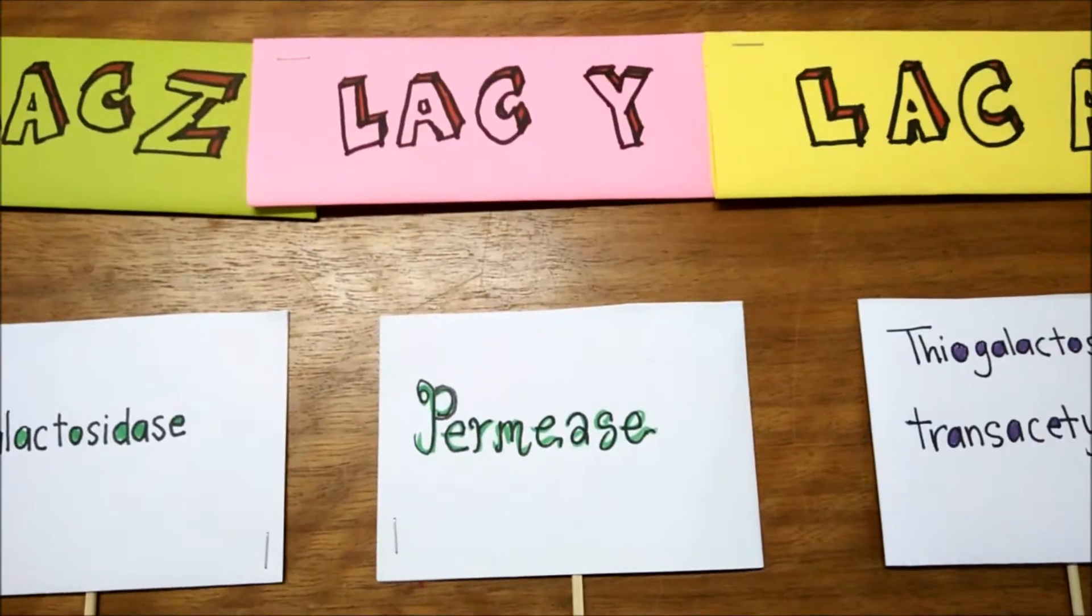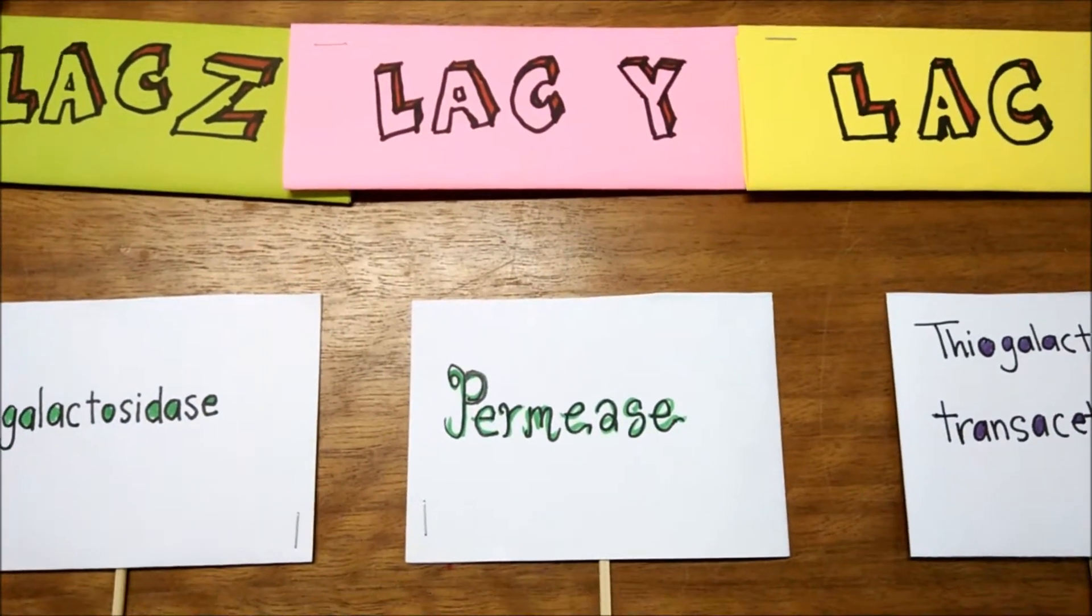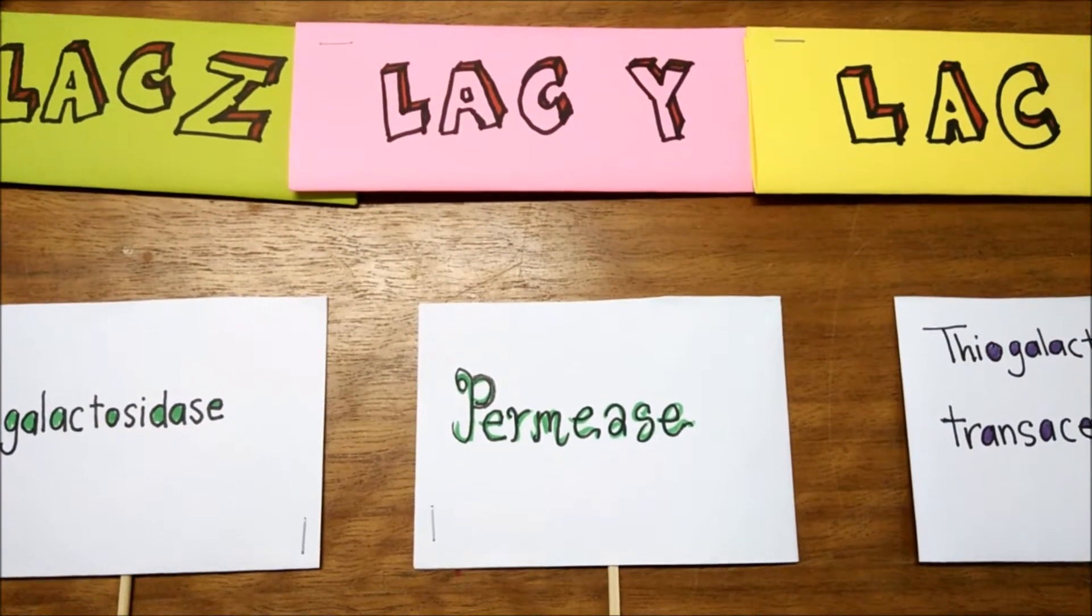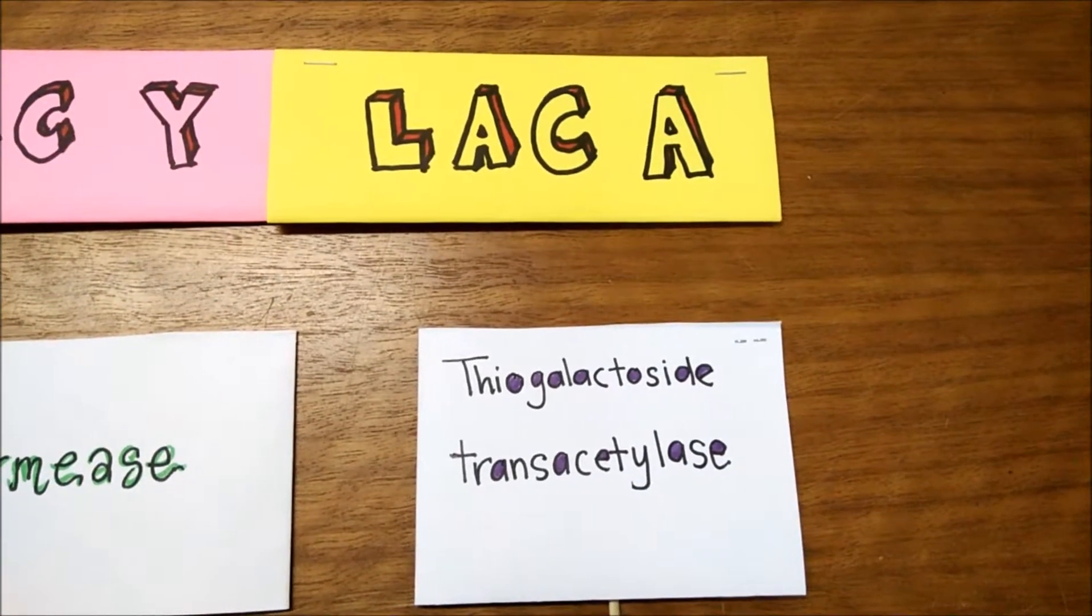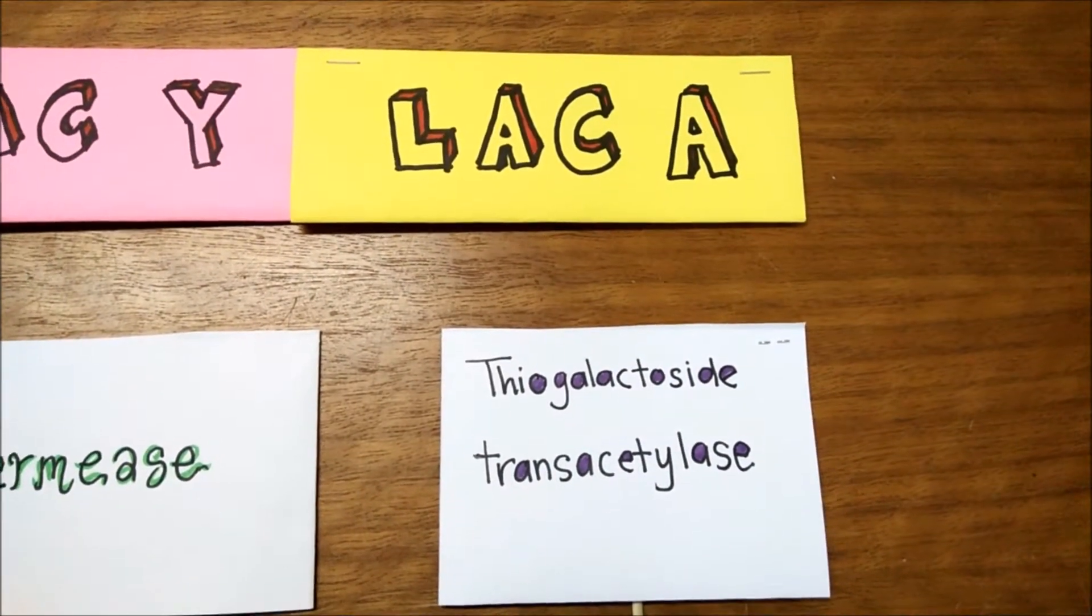Second is Lac Y. Lac Y is the permease. Permease is used to allow lactose to cross cell membrane. And the last one is Lac A. Lac A is thiogalactoside transacetylase. Its function is still unknown.